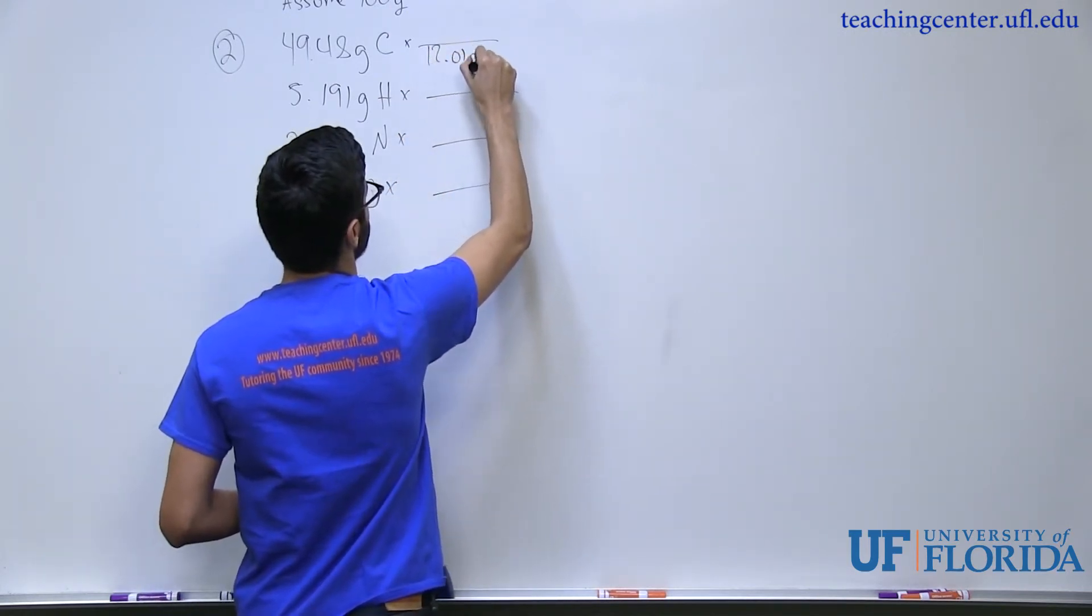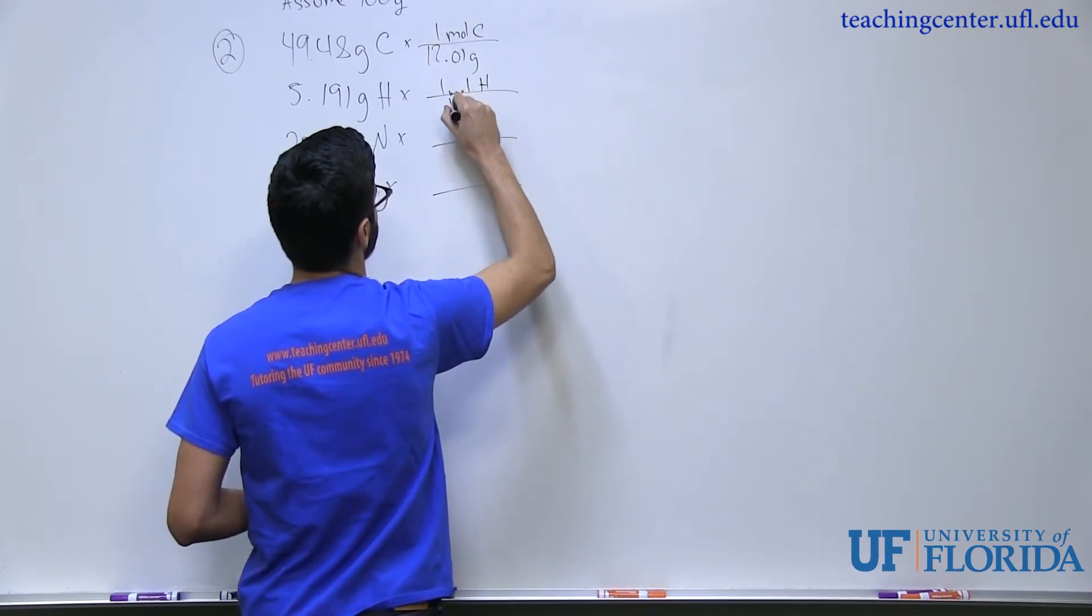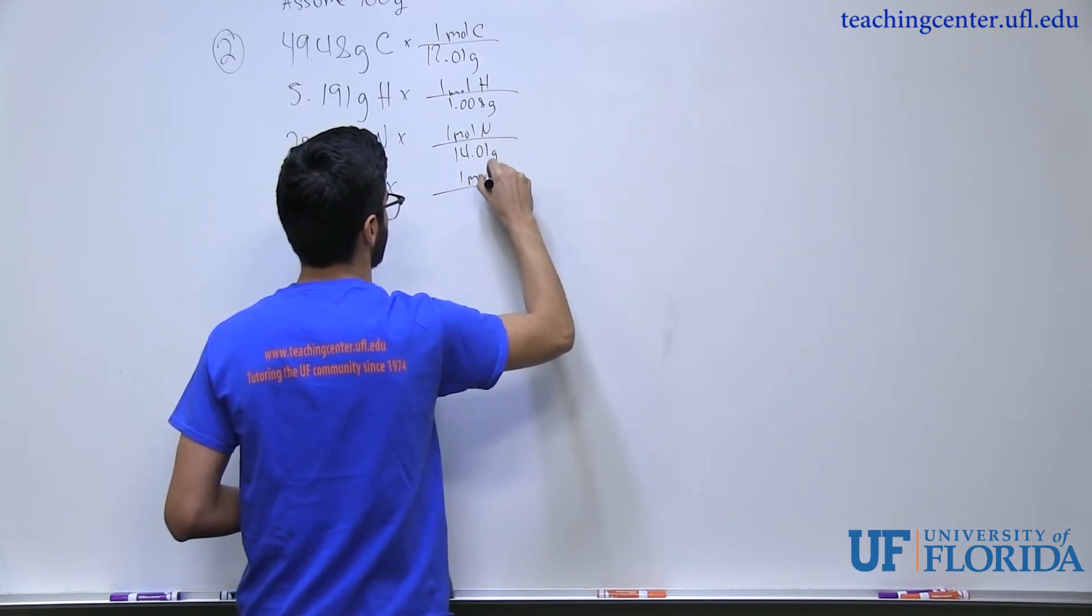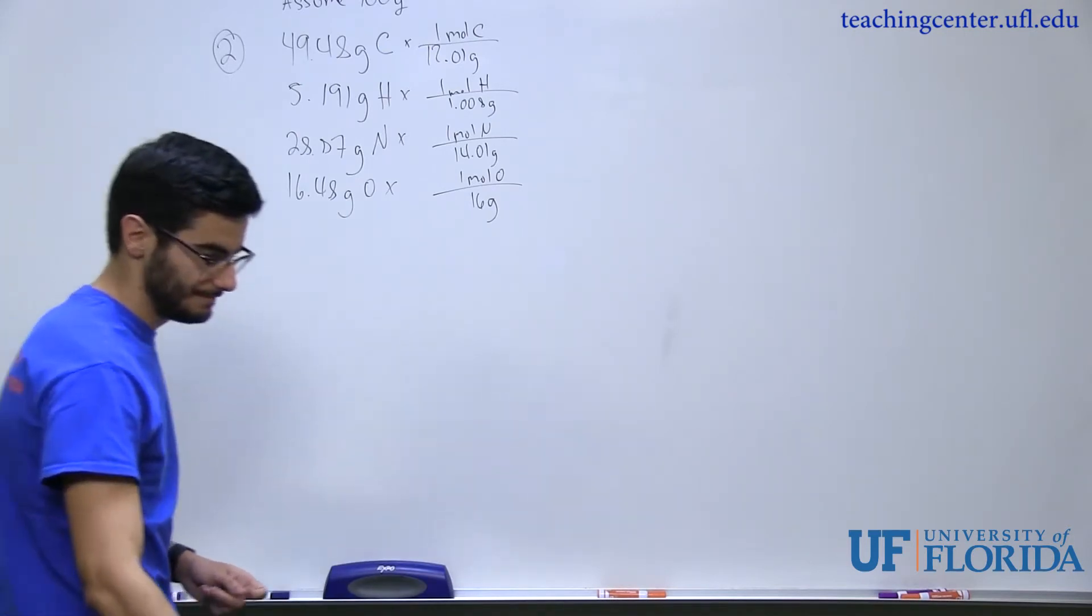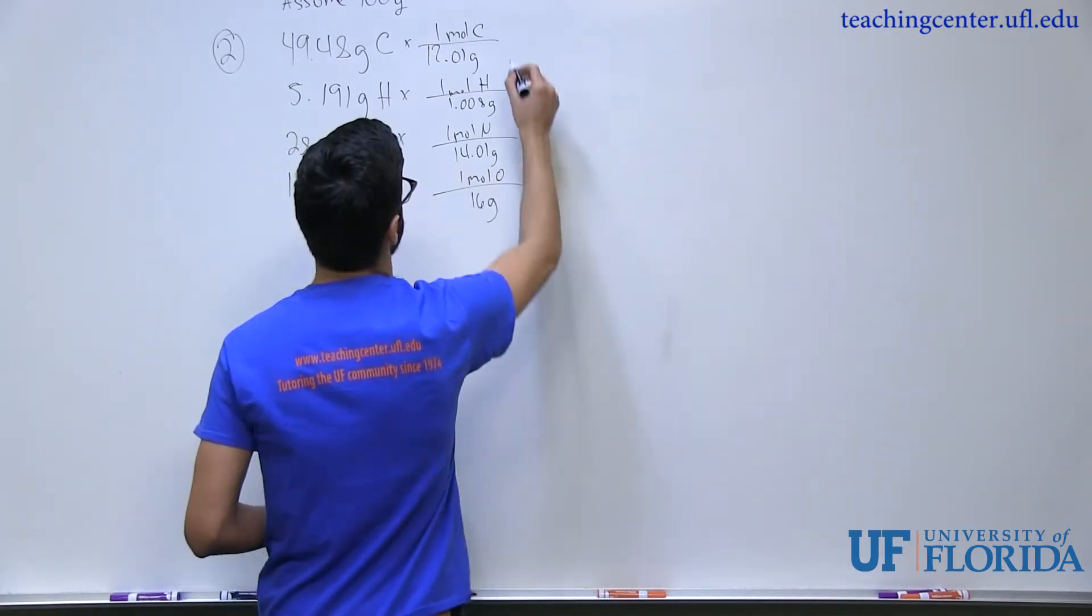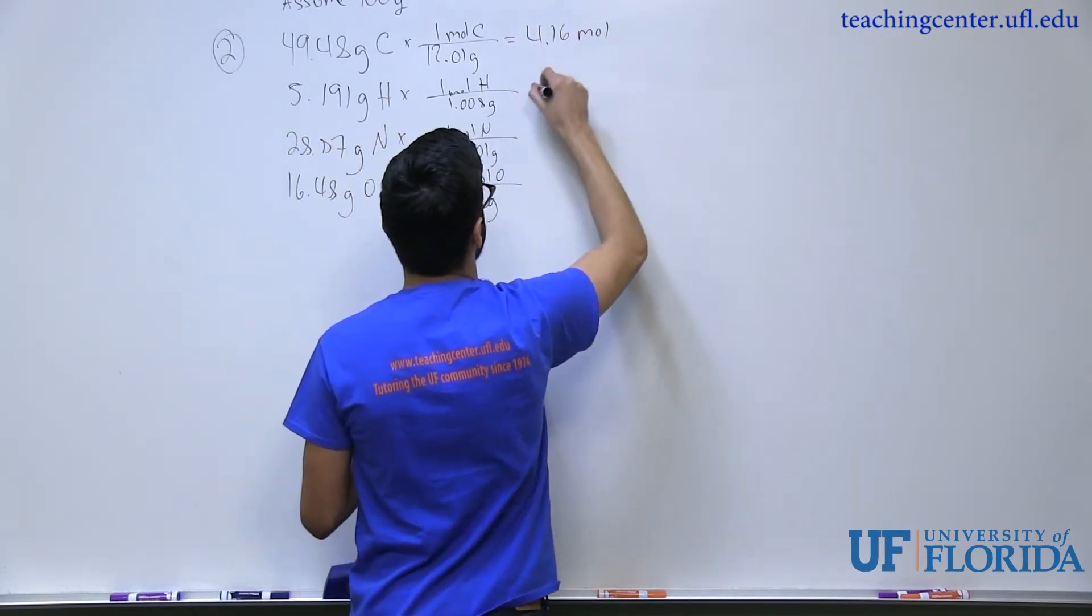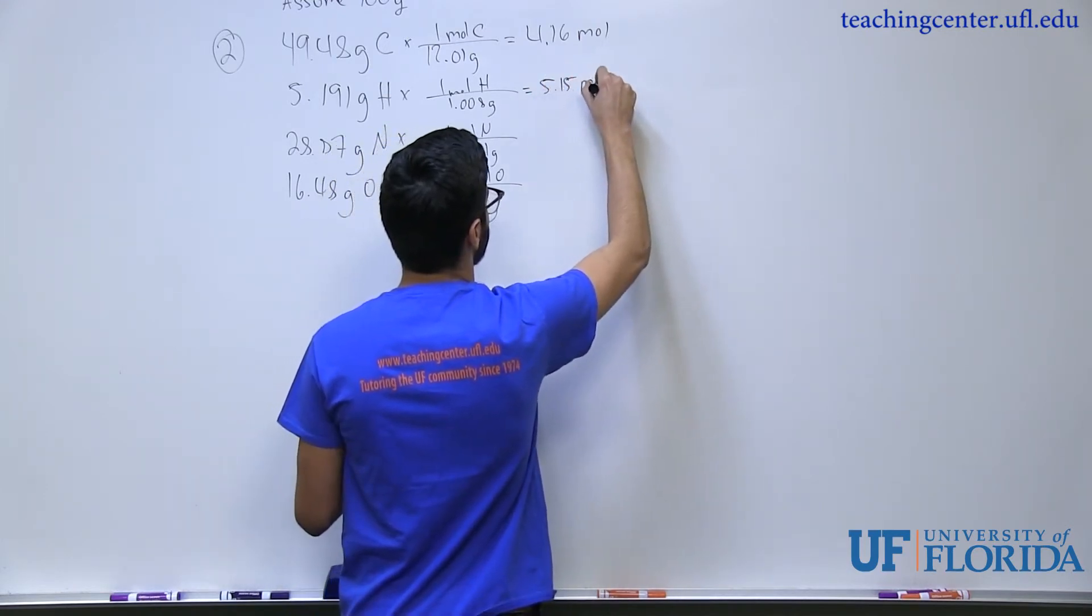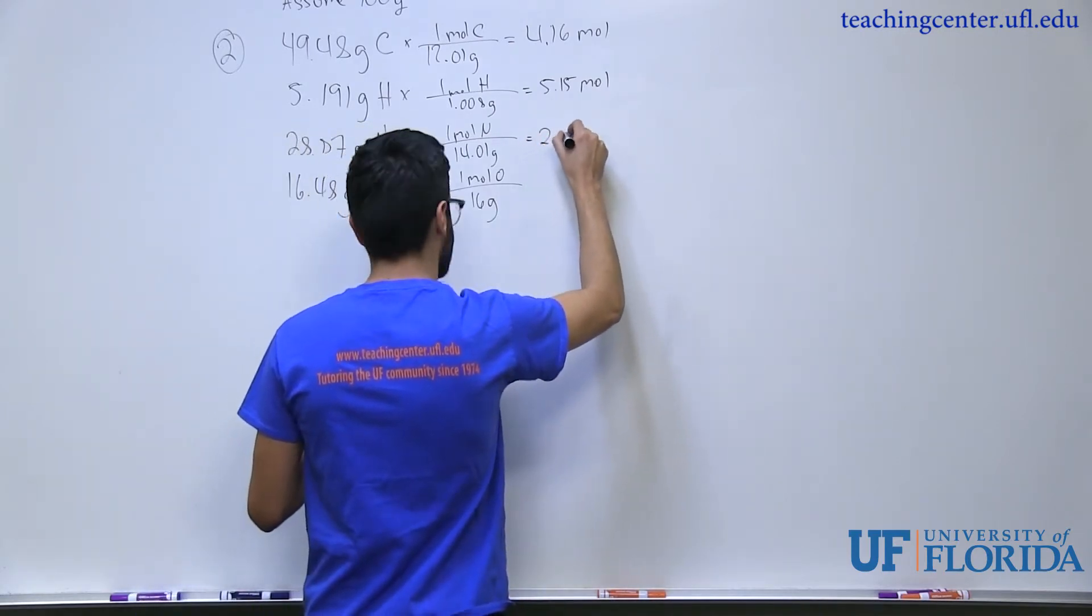I know there's 12.01 grams in one mole of carbon. One mole of hydrogen is 1.008 grams. One mole of nitrogen has 14.01 grams. And one mole of oxygen has 16 grams. So if you go ahead and calculate these all out, you should get here around 4.16 moles, and here you'll get 5.15 moles.